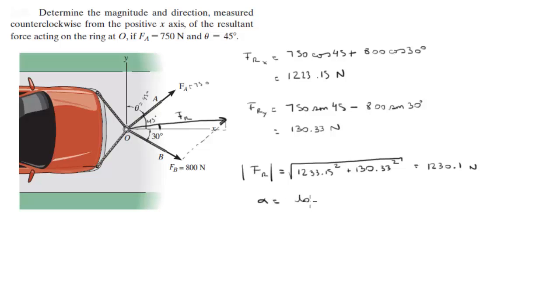And the angle is going to be equal to the tangent inverse of the y component over the x component, 130.33 over 1233.15, and it's going to be positive in this case because it's going up. When you place this number in, it's going to give you 6.08 degrees. So F_r is equal to 1230.1 Newtons at an angle of 6.08 degrees. Final answer.